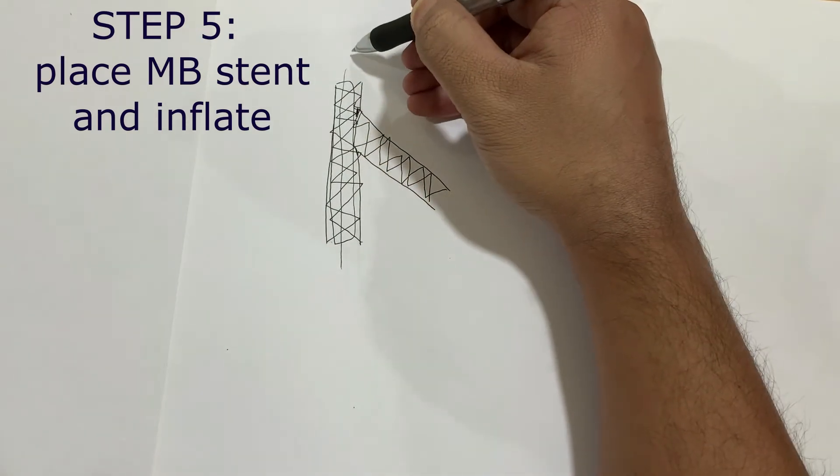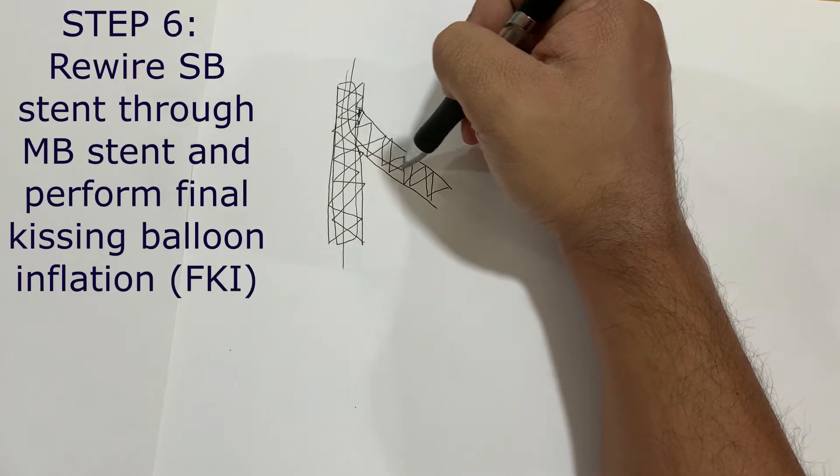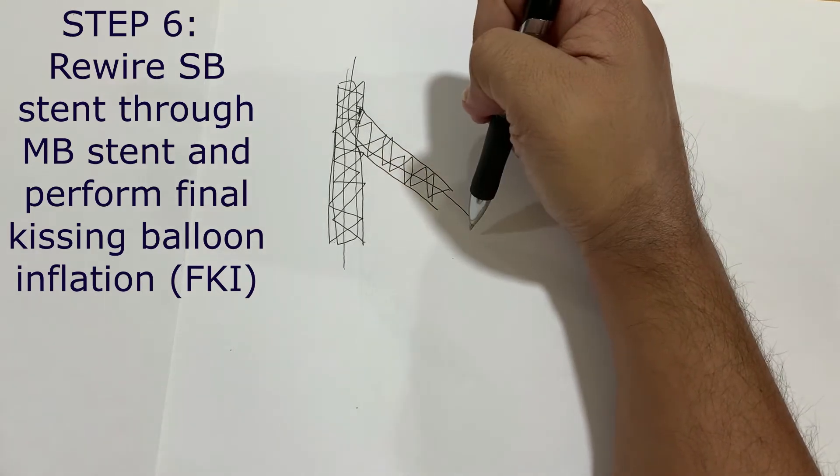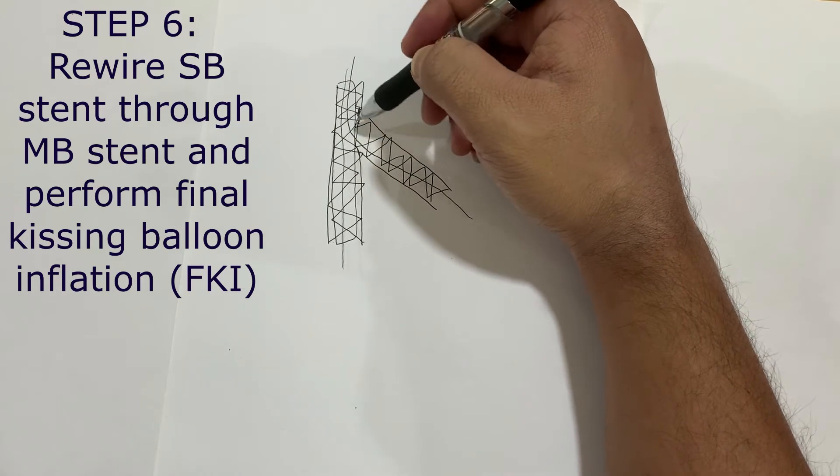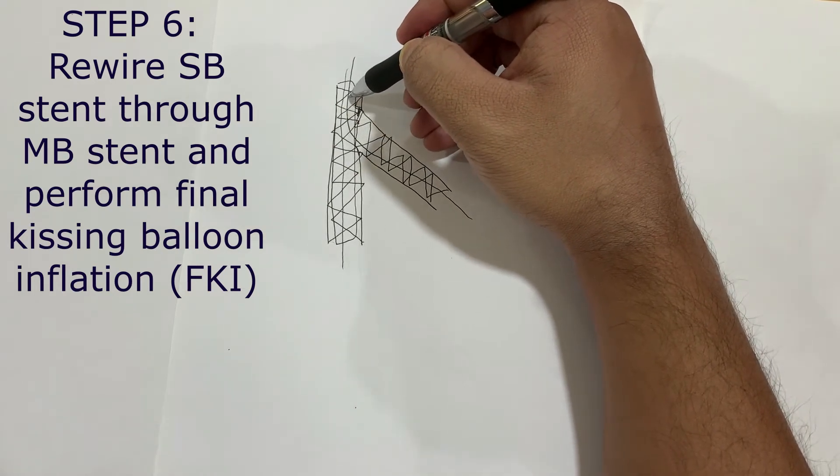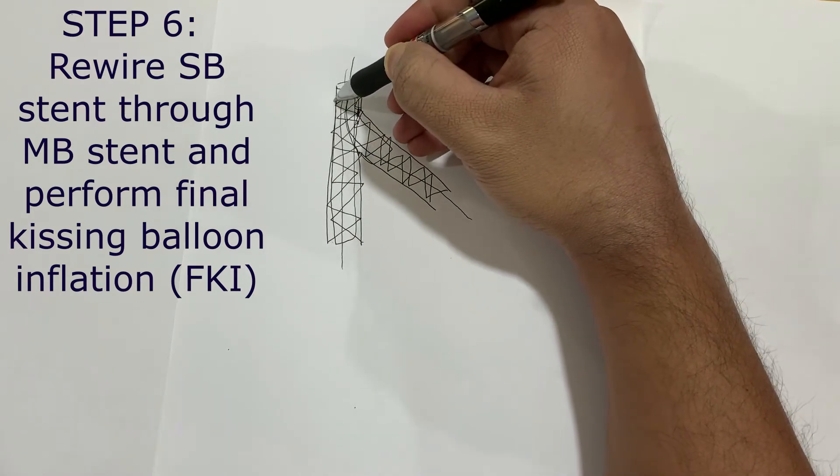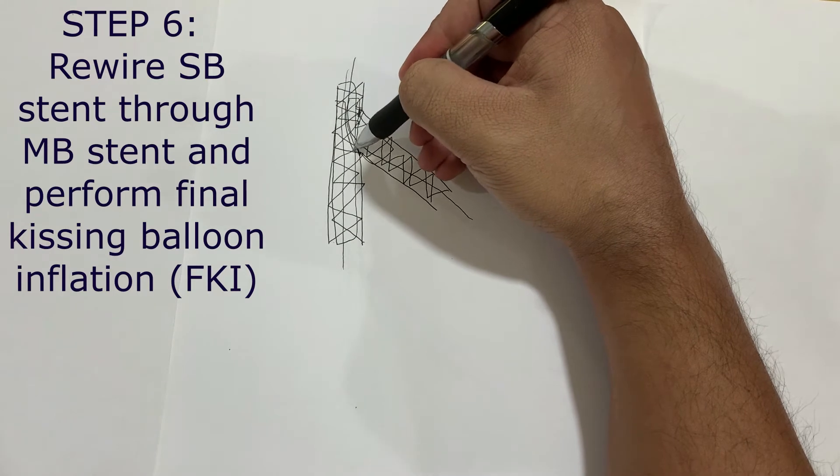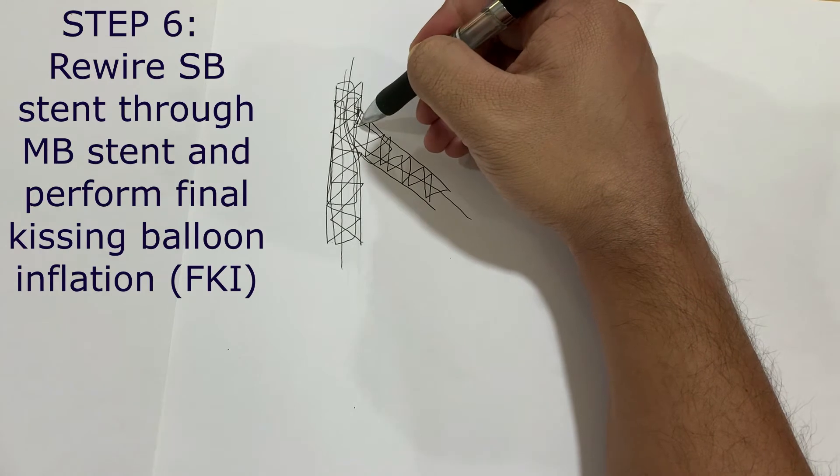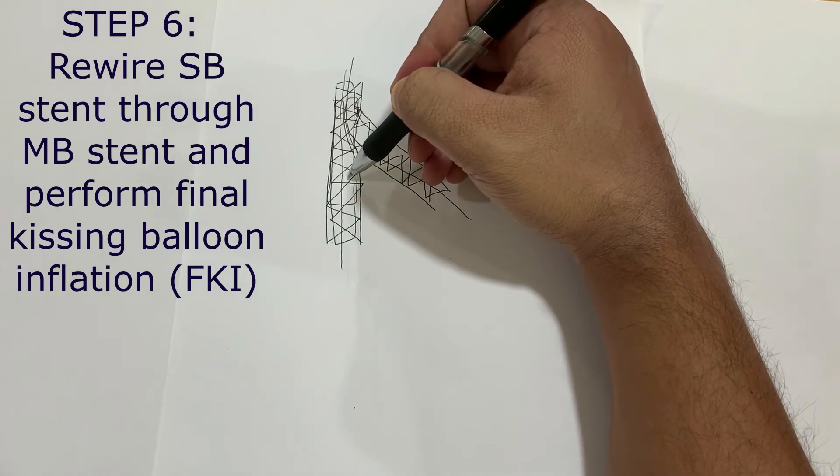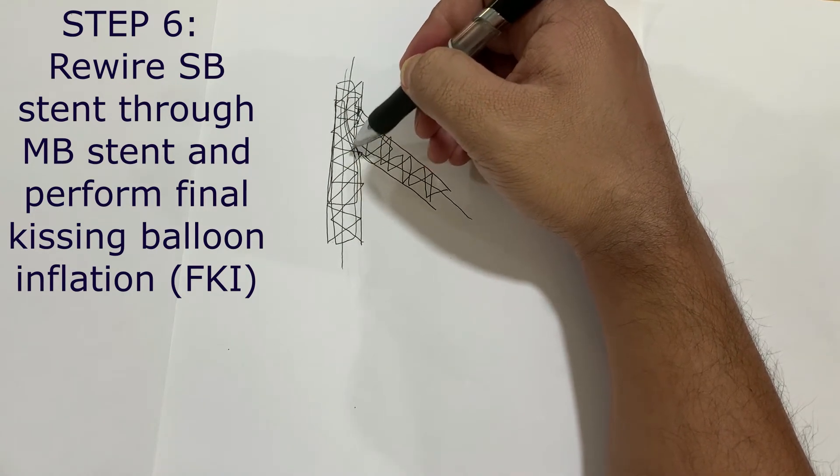After this step, put a wire down through the distal strut. It's easier to get through the distal strut sometimes. Once you are through the distal strut, you can bring balloons on these wires, preferably NC balloons, but sometimes it's difficult to get the NC balloons so you can always choose a non-NC and an NC balloon on one of the wires and you do the final kissing stent inflation.